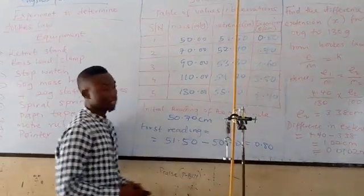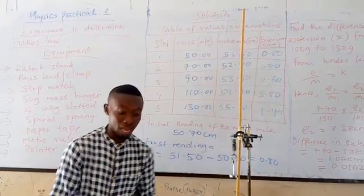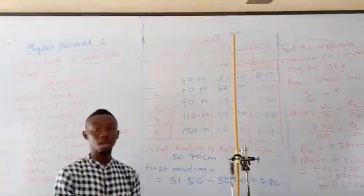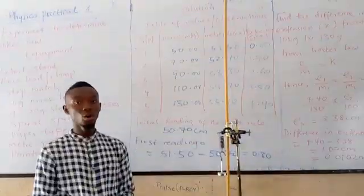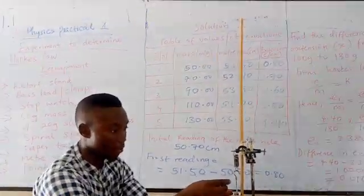Then, we will proceed. We will add this 20 grams slotted mass. We are going to add 20 grams slotted mass to the mass hanger. And also record the extension produced as a result of that. So let's see what will happen.